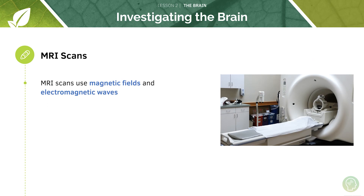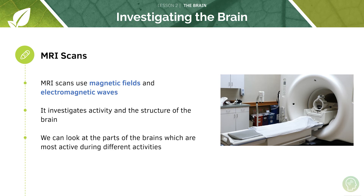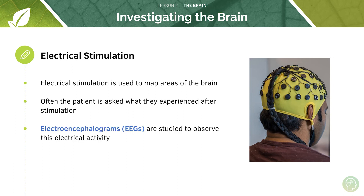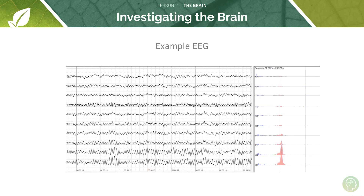We can use MRI scans, which use magnetic fields and electromagnetic waves, to investigate the activity and structure of the brain and see which parts are most active during different activities. Since MRI scans don't use ionising radiation, they are advantageous over CT scans, for example. Electrical stimulation is also used to map areas of the brain — patients are stimulated and asked what they experienced, forming graphs called electroencephalograms (EEGs), which are studied to observe electrical activity and show which parts of the brain are active at different times.